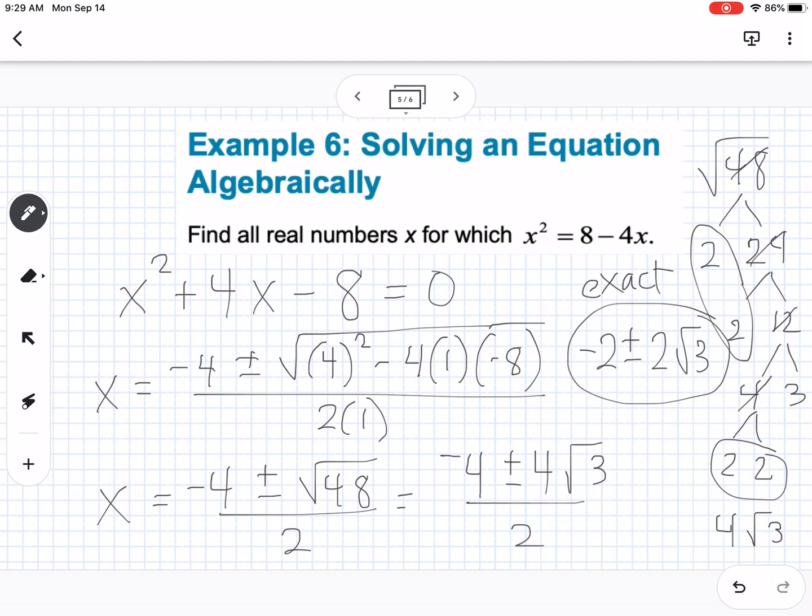And then if you want to get the decimal values, you just type that into your calculator. So negative 2 plus 2 square root of 3 gives me approximately 1.46. And negative 2 minus 2 square root of 3 gives me negative 5.46. I'm totally running out of space. So these are my approximate answers. If I leave it in simplified square root form, then those are my exact answers.